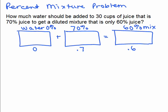So remember, this is just the diluted mixture of juice. We don't know how much water to put in here. In fact, it's asking us that. So that will be our variable.